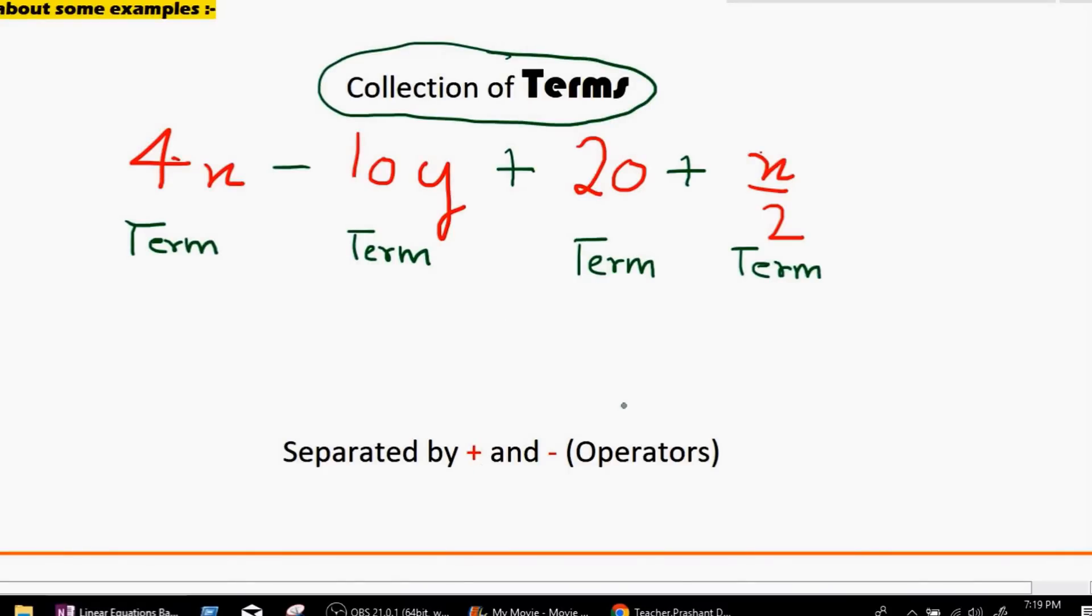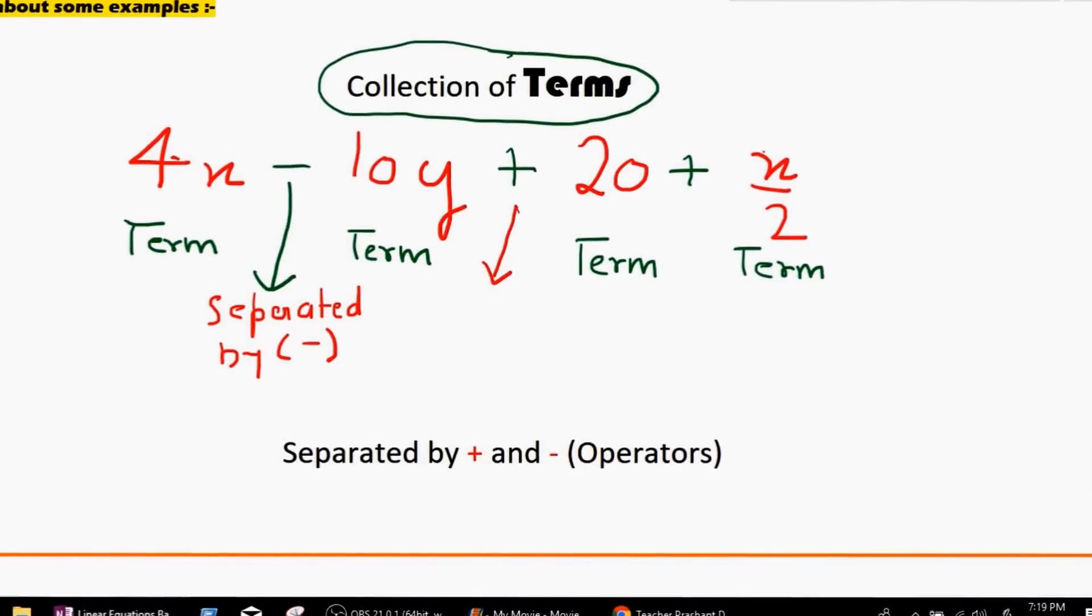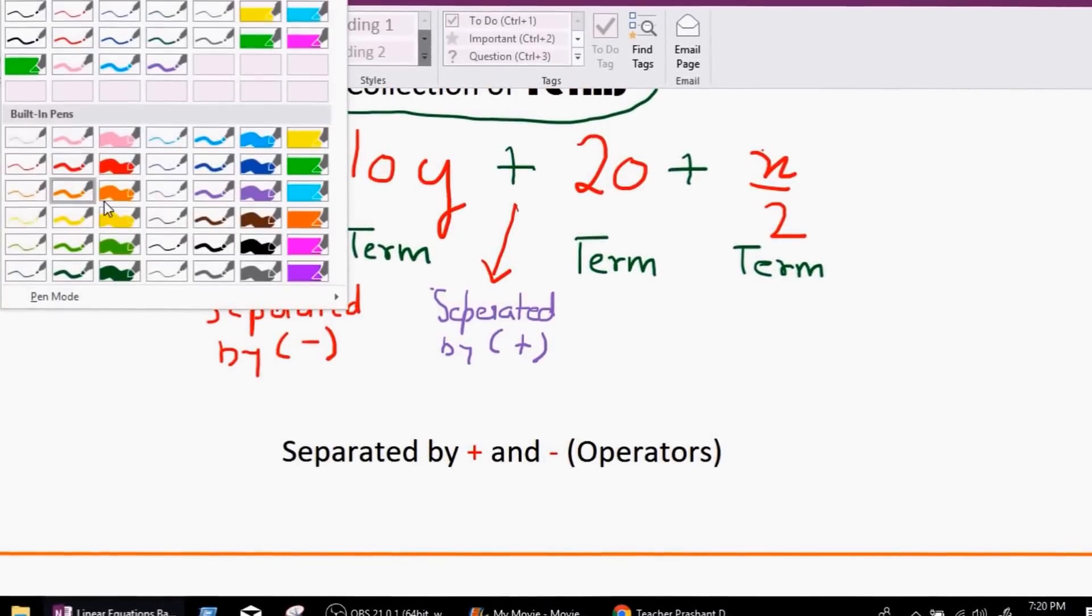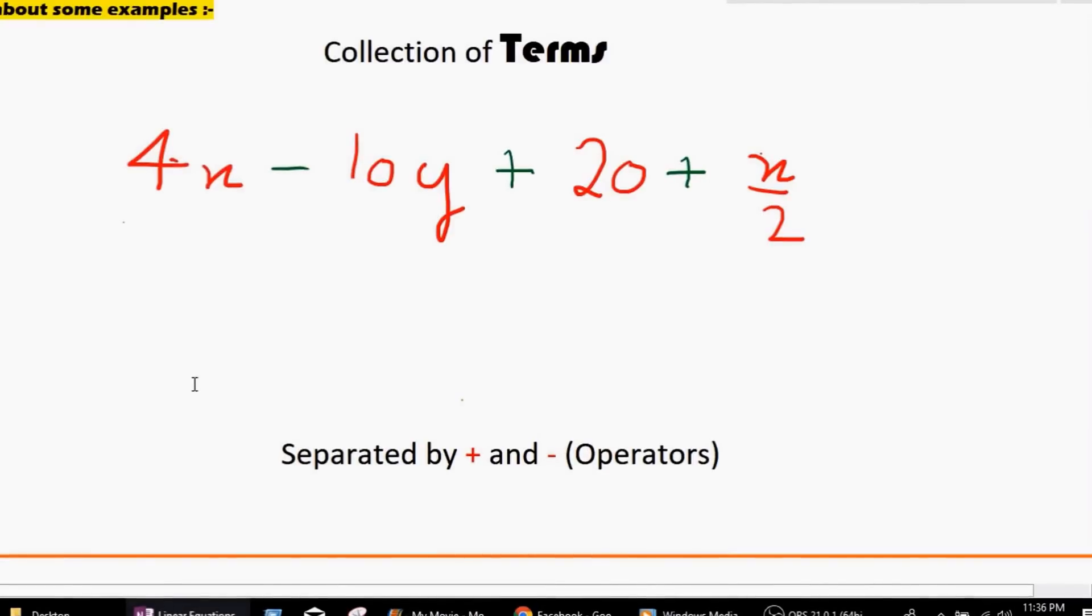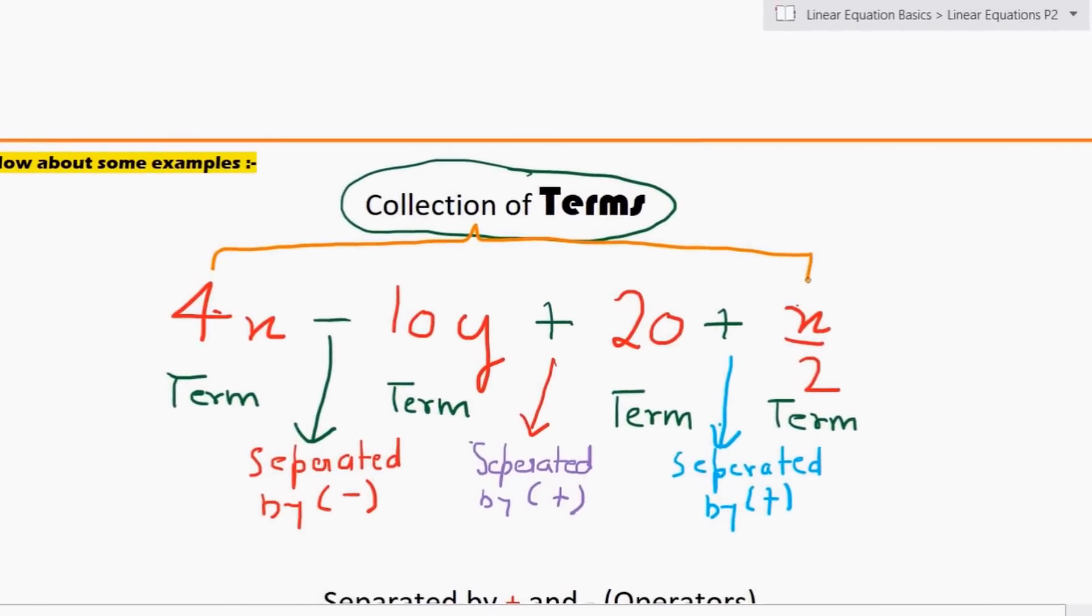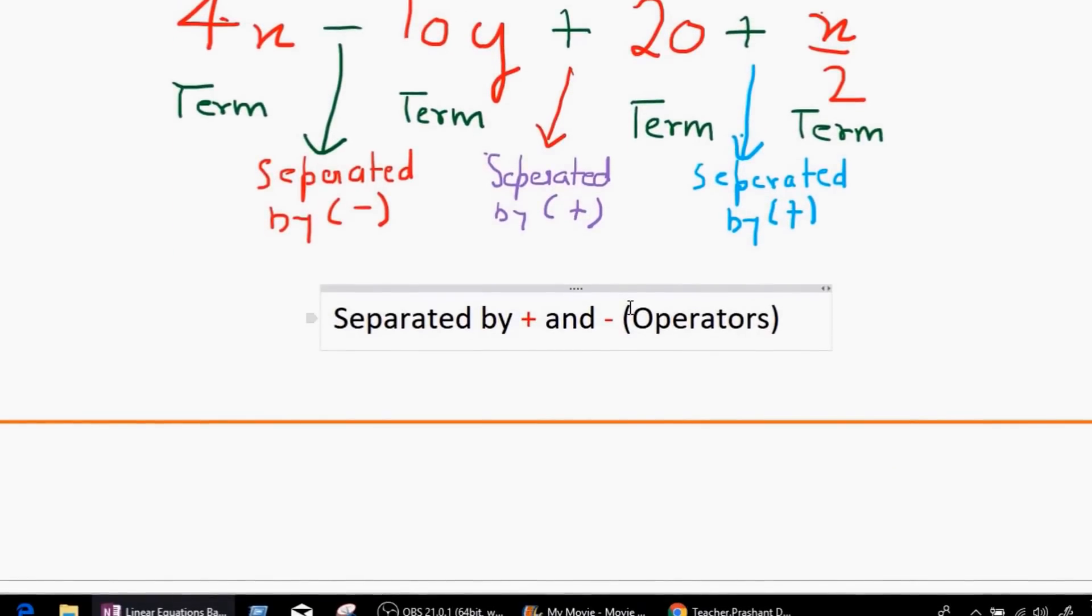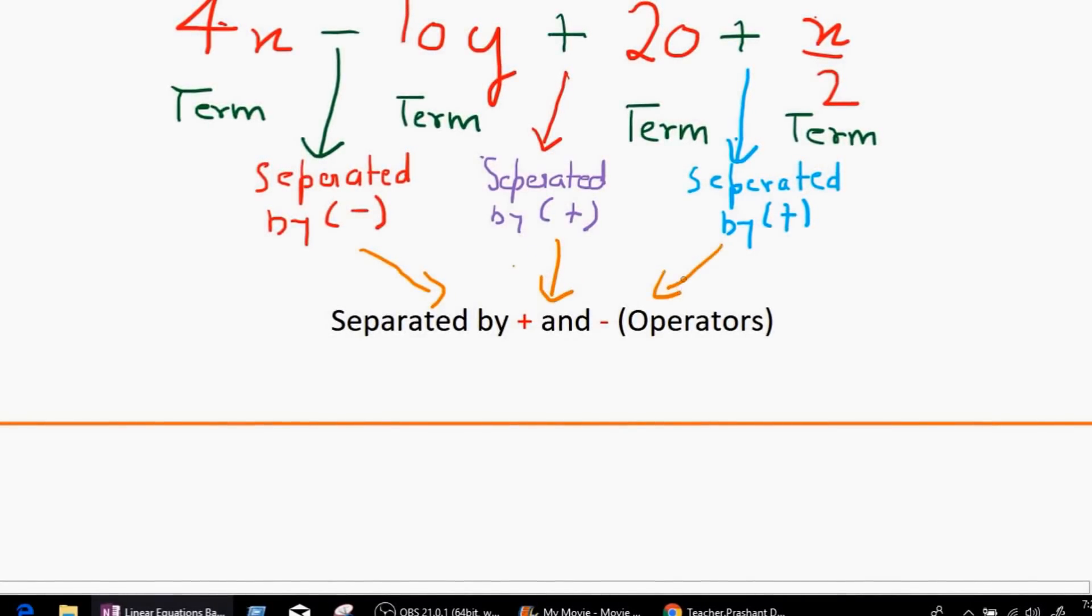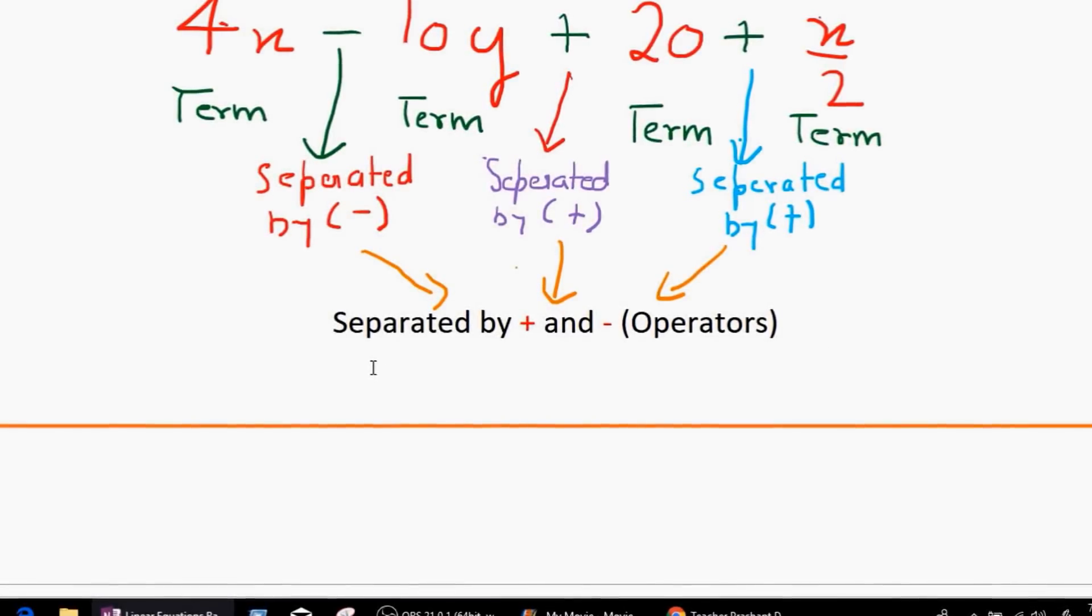4x is a term, 10y is a term and 4x and 10y are actually separated by minus, by the minus sign. And we can also see that 10y and 20 are also terms and they are separated by plus. As the last group we can see is 20 plus x over 2. They are also terms and they are separated by plus operator. So we can say that all these four terms are actually a collection. And they are also separated by operators which are plus and minus only. Keep that in mind. That a term can only be separated by the operator plus and minus.